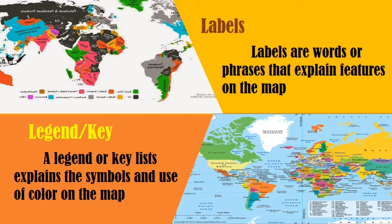Another is the legend or the key. They are actually a list that explains the symbols and the use of color on a map. Legend or keys are a visual explanation of the symbols that you can find on the map. Typically, it includes a sample of each symbol — like a point, a line, or an area — and a short description of what that symbol means.